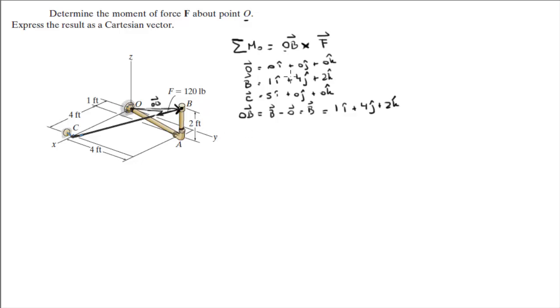Now we need to find the Cartesian vector form of F and to do that we need to find first the vector that goes from B all the way to C. This is equal to C minus B and it is equal to 4i minus 4j minus 2k.